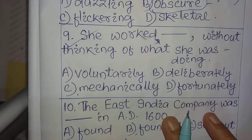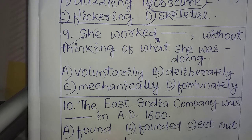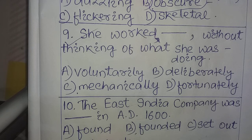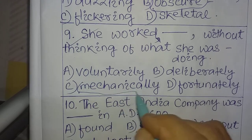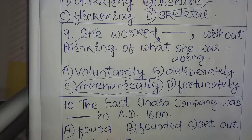Question number nine: 'She worked ___ without thinking of what she was doing.' Options: A) voluntarily, B) deliberately, C) mechanically, D) fortunately. The correct answer is 'mechanically'. She worked mechanically without thinking of what she was doing — just like a machine, which has no ability to think.